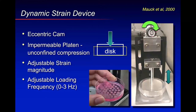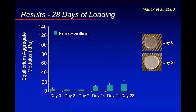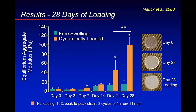We used an eccentric cam to load at frequencies up to three hertz and cultured these explants for four weeks. On day zero, the agarose with chondrocytes was 5 kilopascal in compressive modulus. By day 28, it went up to about 20 kilopascal — a four-fold increase. But when we dynamically loaded it, we had a modulus of 100 kilopascal — a 20-fold increase from 5 to 100 kilopascal. This was our very first and most cited study. Had it not been so successful, Clark and I would probably have abandoned cartilage tissue engineering.